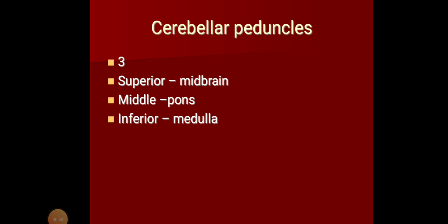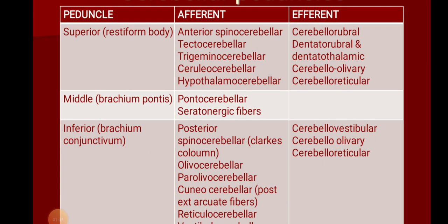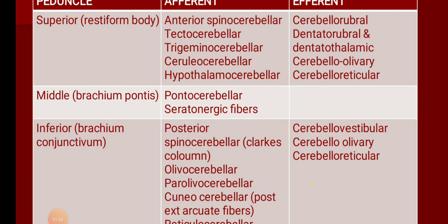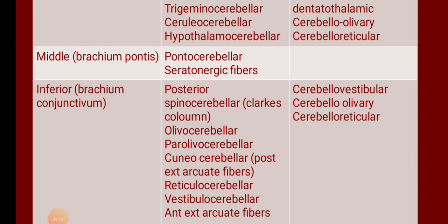One very important thing you should know about each peduncle is what fibers are passing through it. Look at that figure — these are the fibers which you find passing through the cerebellar peduncles. We will start with the inferior cerebellar peduncle. A large list of fibers is given there: posterior spinocerebellar, olivocerebellar, parolivocerebellar — a very large list.